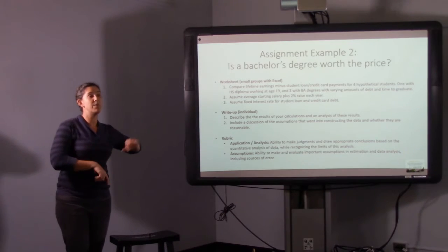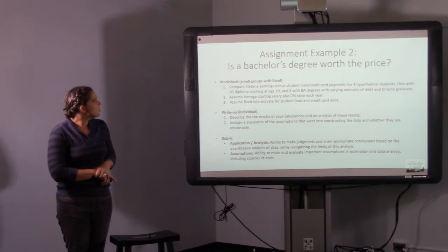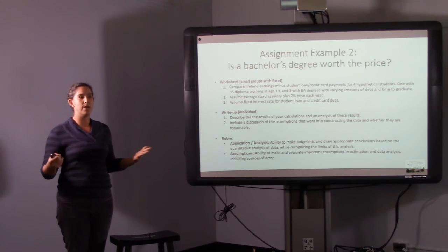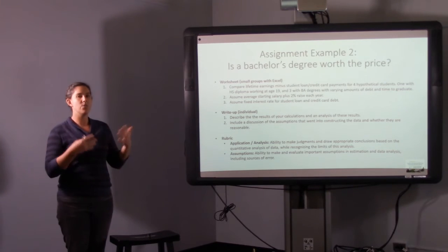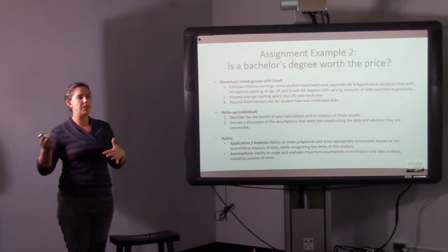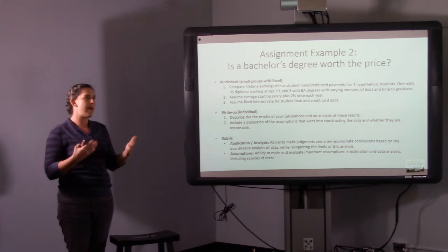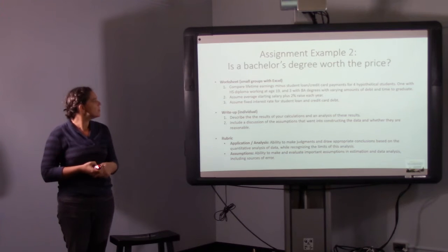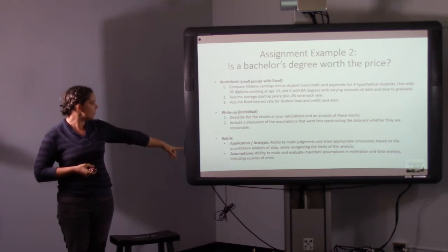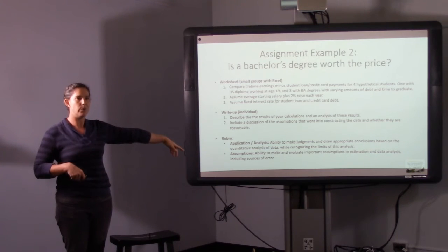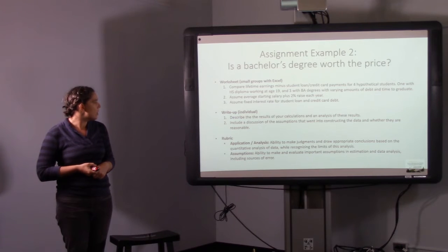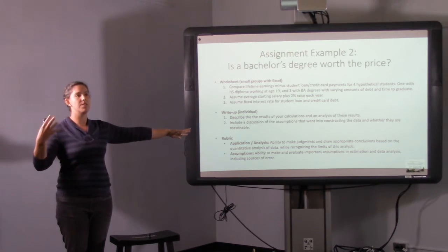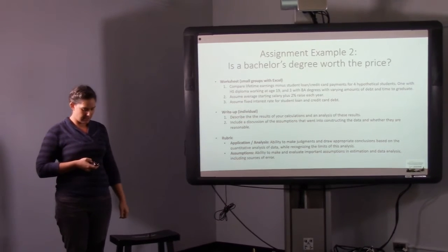So the next one, this is one that I did with an Excel spreadsheet. So is bachelor's degree worth the price? I gave them four hypothetical students. One who's just graduating from high school and starts working right away. Another one who graduates in four years from university and takes so much student loans. Another one who takes seven years but less student loans and compares sort of lifetime earnings and how they pay back. Doing this with Excel was the best really way, or almost the only way to get them to do all these computations. And so there's a lot of assumptions. So here I was looking at the assumptions. This part of the rubric is often one of the hardest ones to get the students to do.